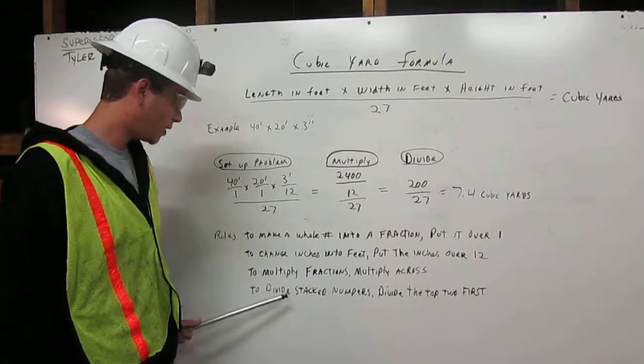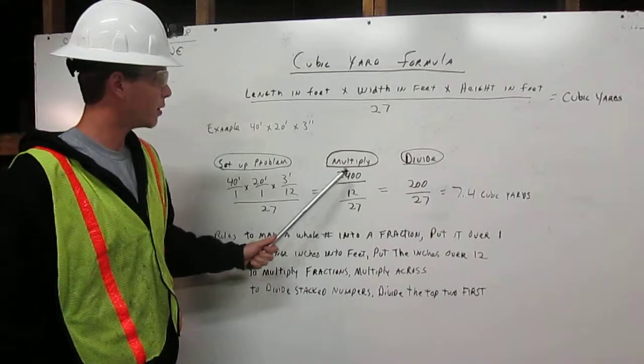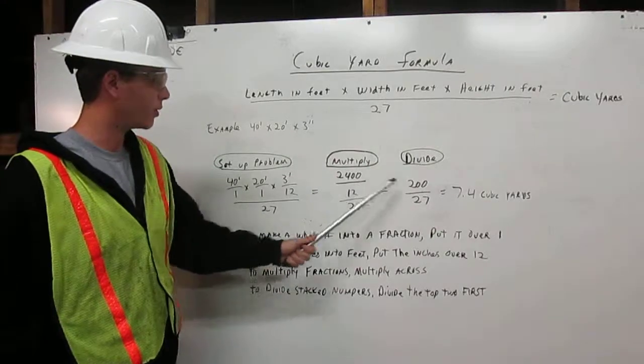And to divide stacked numbers, divide the top two numbers first. 2400 divided by 12 gives us 200.